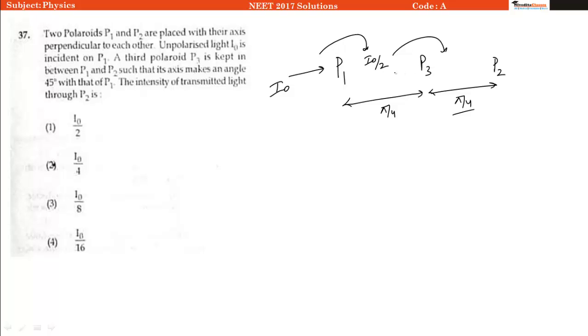When it will pass P3, then the intensity will be equal to initial intensity multiplied by cos squared theta, where theta is the angle between P1 and P3.